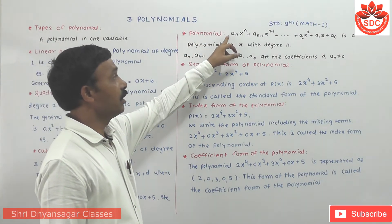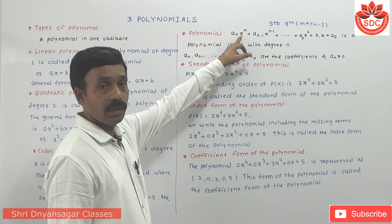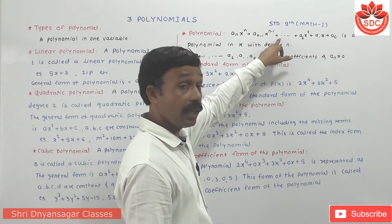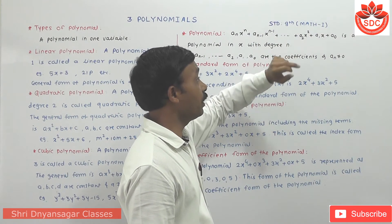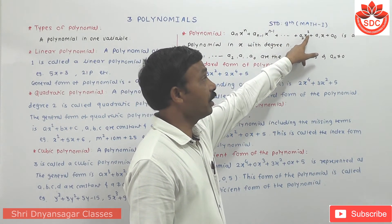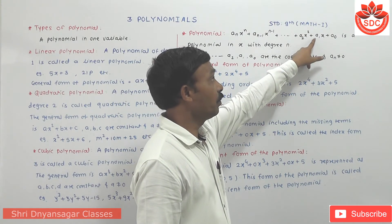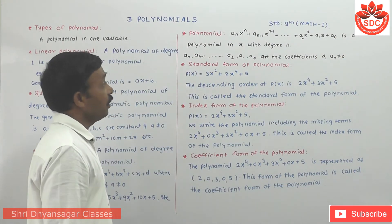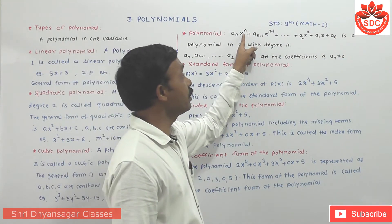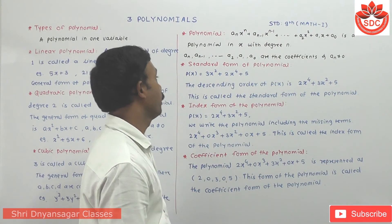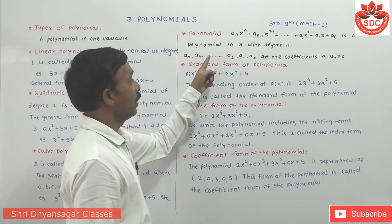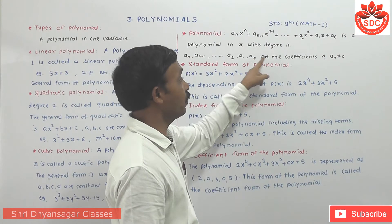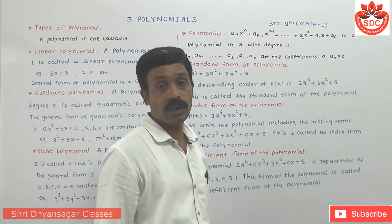The general polynomial form is: aₙxⁿ + aₙ₋₁xⁿ⁻¹ + aₙ₋₂xⁿ⁻² + … + a₂x² + a₁x + a₀, where a₀, a₁, …, aₙ are all coefficients and aₙ ≠ 0.